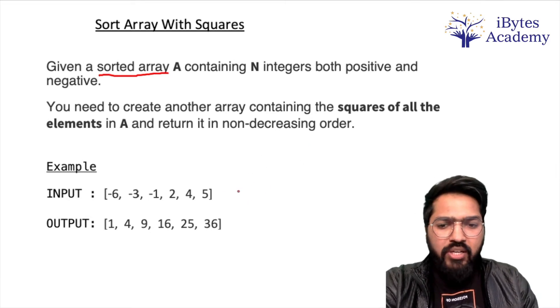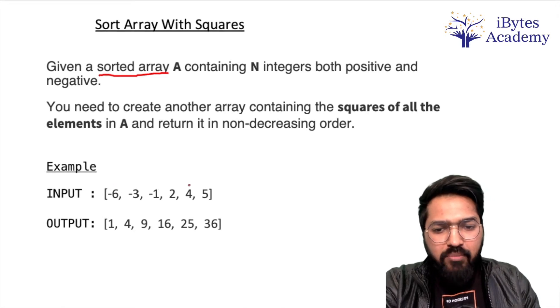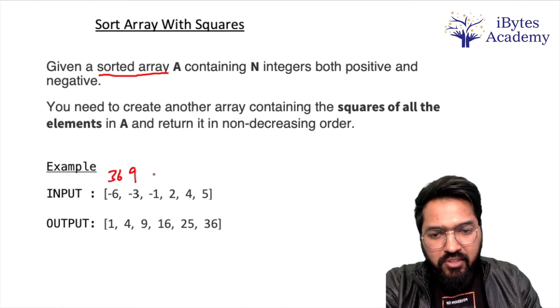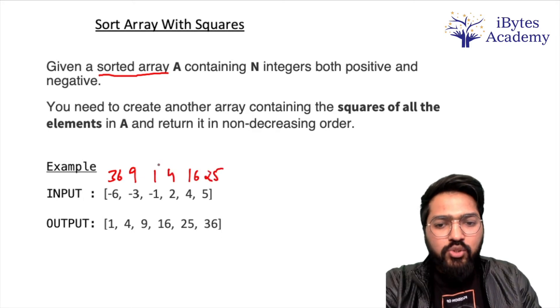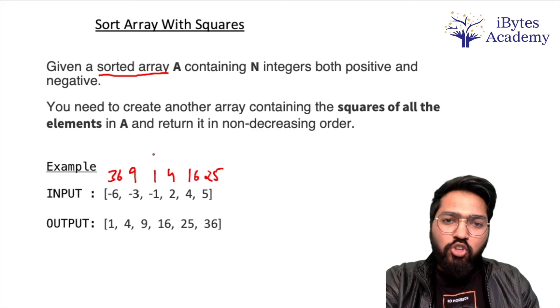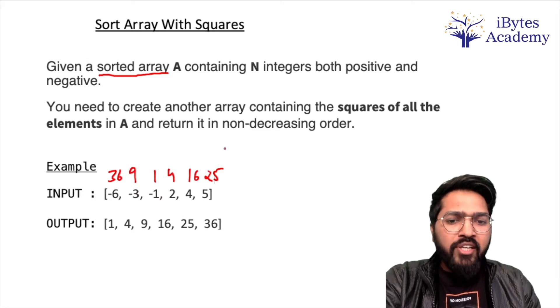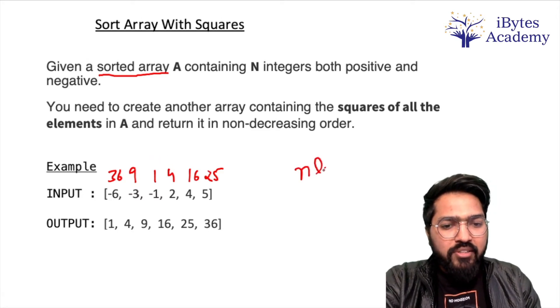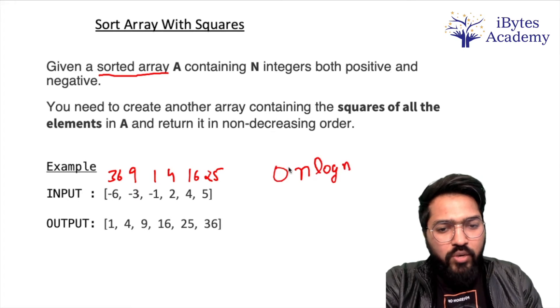Chalo discuss karte hai. So what is going to be the naive solution? A naive solution would be ki humm log sare elements ko pahle square karte hai - that is 36, 9, 1, 4, 16, 25 - aur phir ye jo 6 elements hai inko sort karte hai. But hummare sorting algorithm me n log n lagta hai, right? O(n log n) lagta hai.